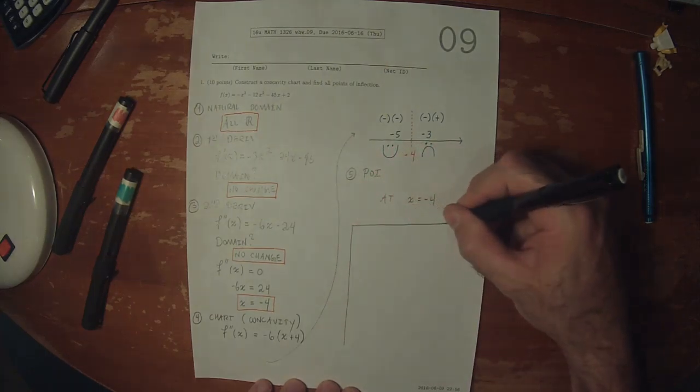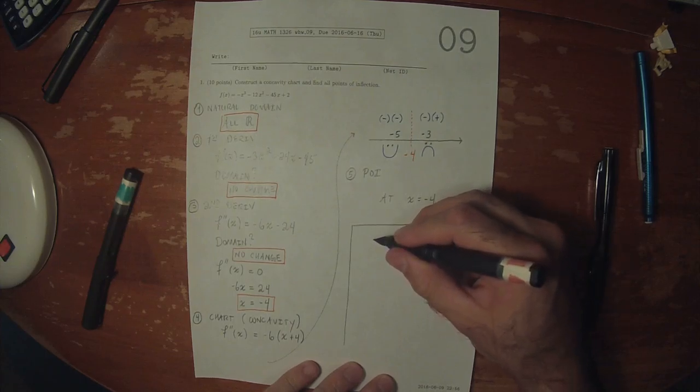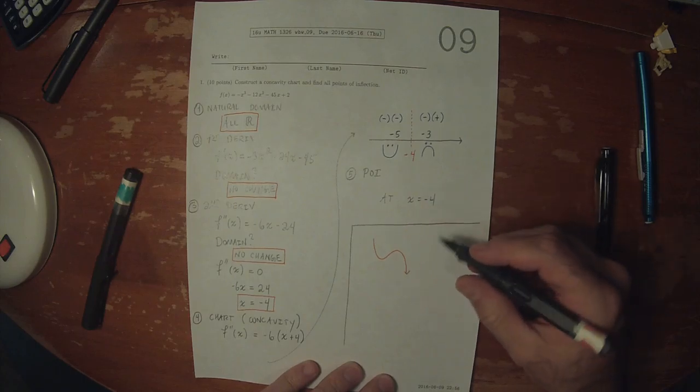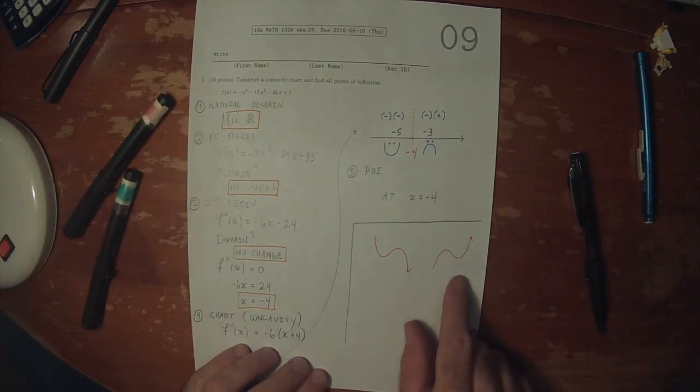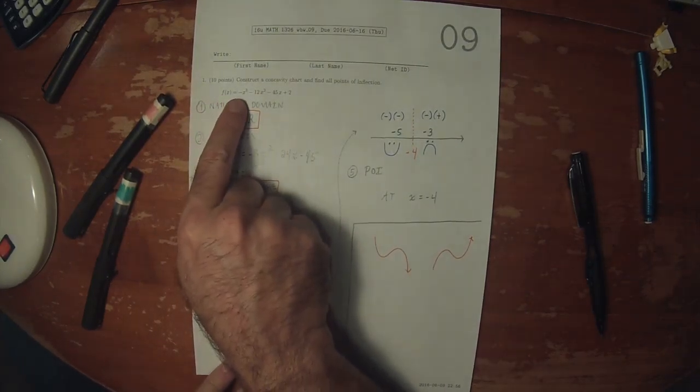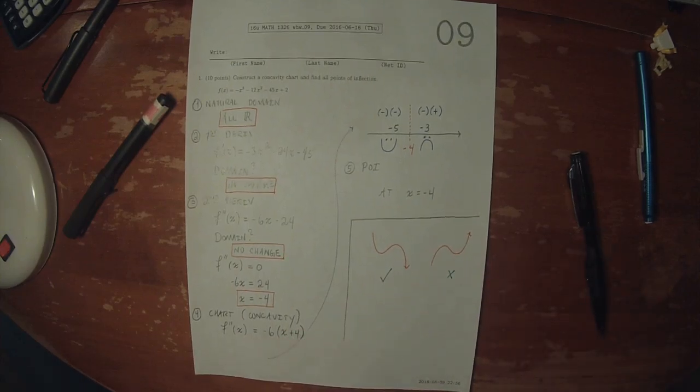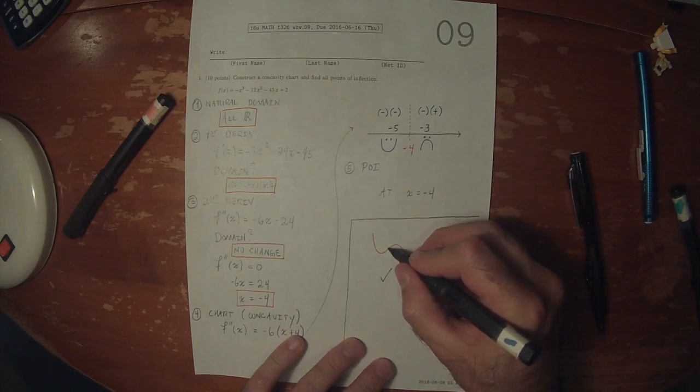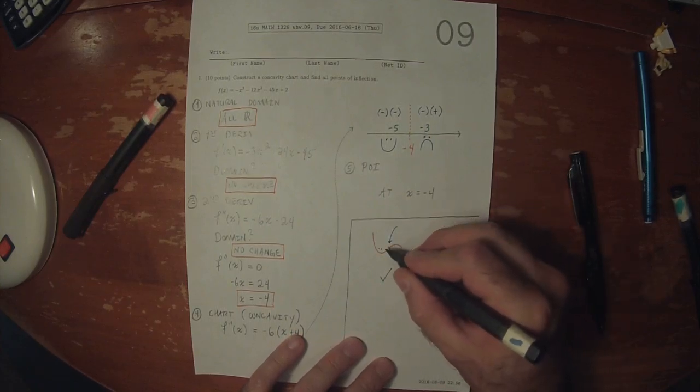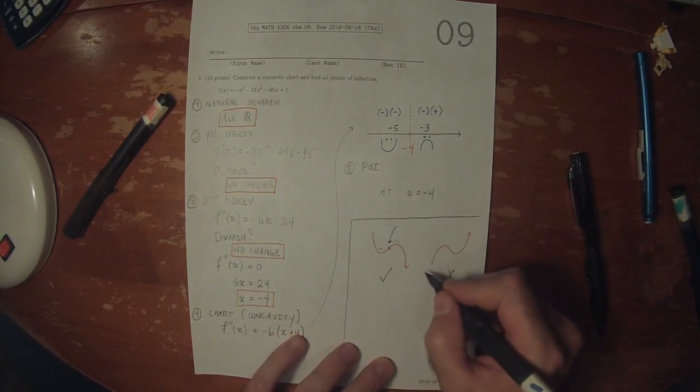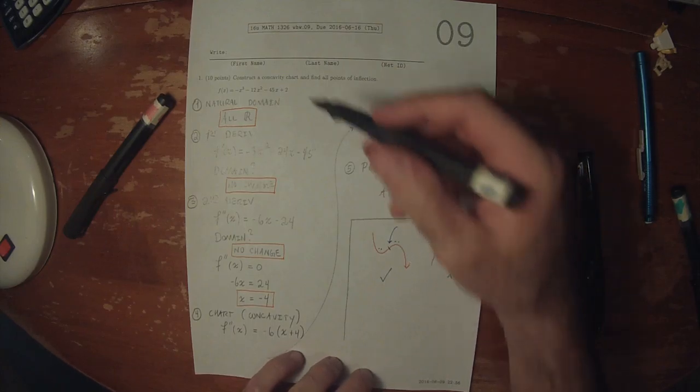Most of this you could have guessed by knowing that this is a cubic. All cubics look like one of two shapes. The distinguishing factor is the sign of the leading coefficient. The leading coefficient is negative for this cubic, so we know which shape it is. You can see that this cubic changes its concavity at that point, from concave up like a cup to concave down like a frown. So our concavity chart agrees with our previous knowledge about the cubic.